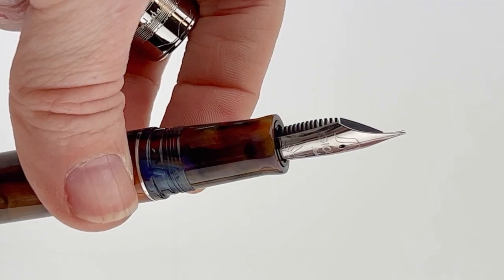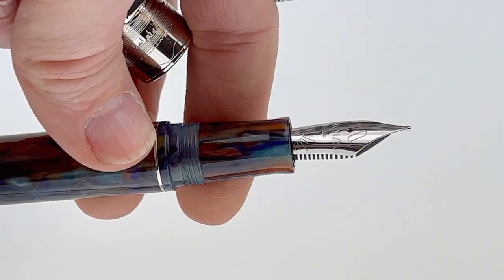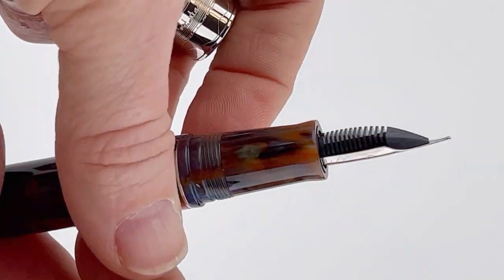So there you have it. This pen does have a threaded cap and is fitted with a stainless steel number six size nib that's branded Joya.